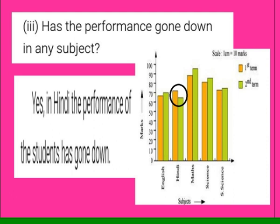Subdivision C: has the performance gone down in any subject? Looking at the bar graph, in Hindi alone the first term's bar is taller than the second term's bar, meaning first term performance was better than second term. So in Hindi alone the performance went down. In all remaining subjects the second term's performance was better than the first term's.